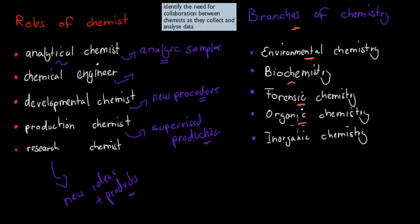Organic chemistry involves chemists who deal with carbon compounds, and inorganic chemistry involves chemists who deal with non-carbon compounds — for example, different types of metals, which are all inorganic. So we have many different types of branches and many different types of roles, which means one person can't possibly do everything.